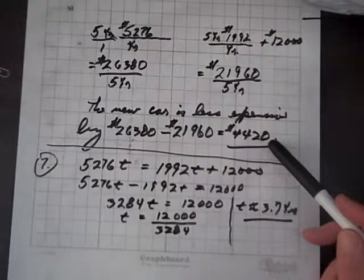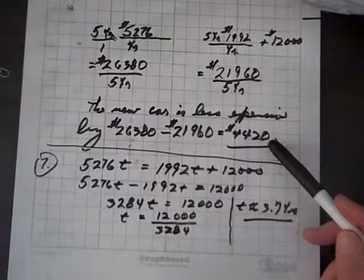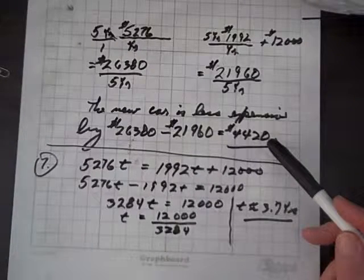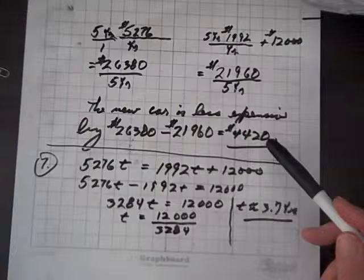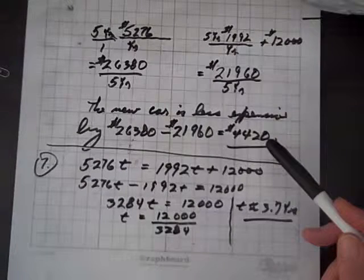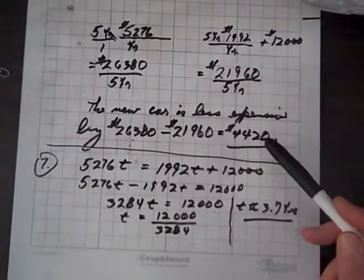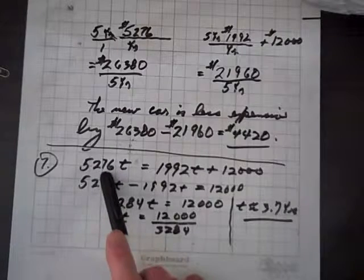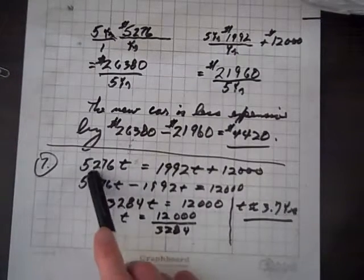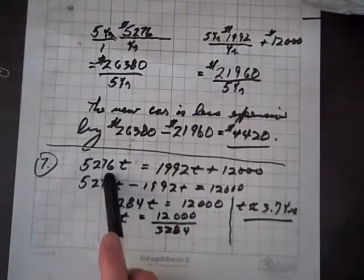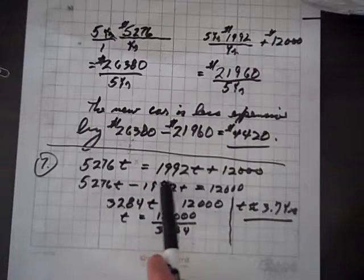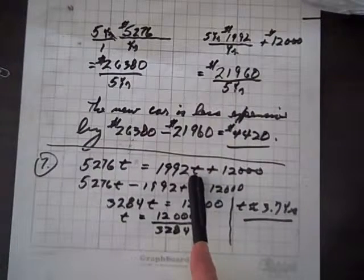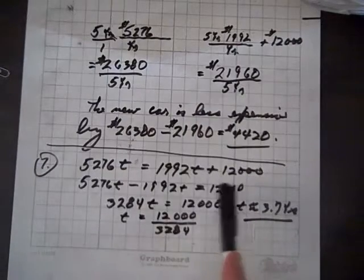For question seven, the question is, how long will it take, in how many years will it take for the new car to cost as much as the old car? When will we be at equilibrium? So the cost of the old car is $5,276 per year, so in terms of an expression, that's 5,276 times t years. Whereas the cost of the new car is $1,992 t years, plus the $12,000 it costs for that.